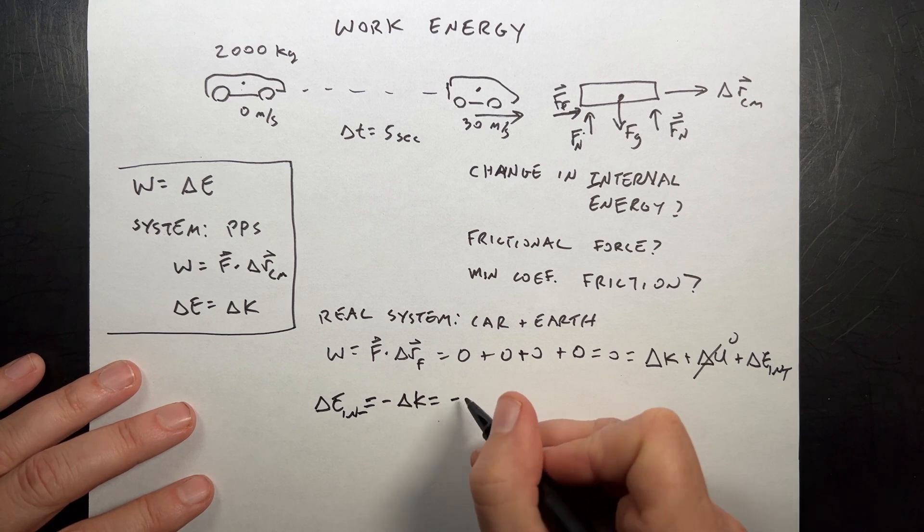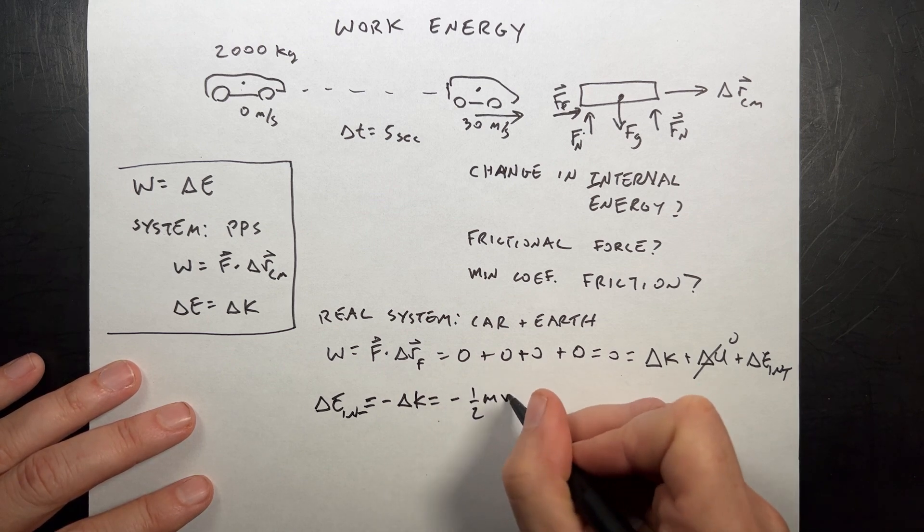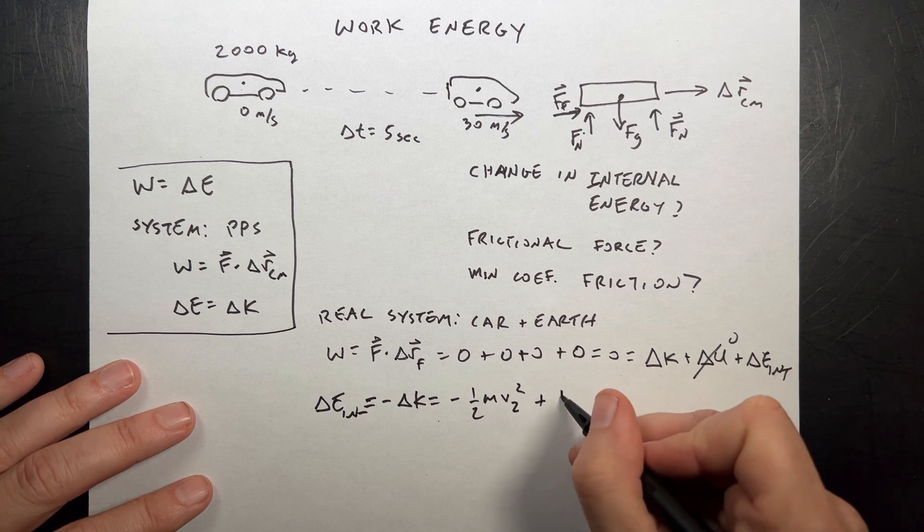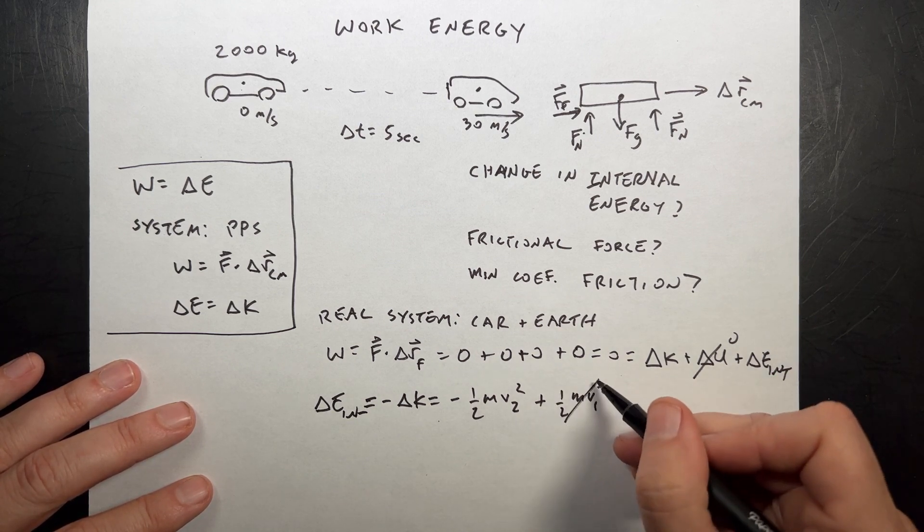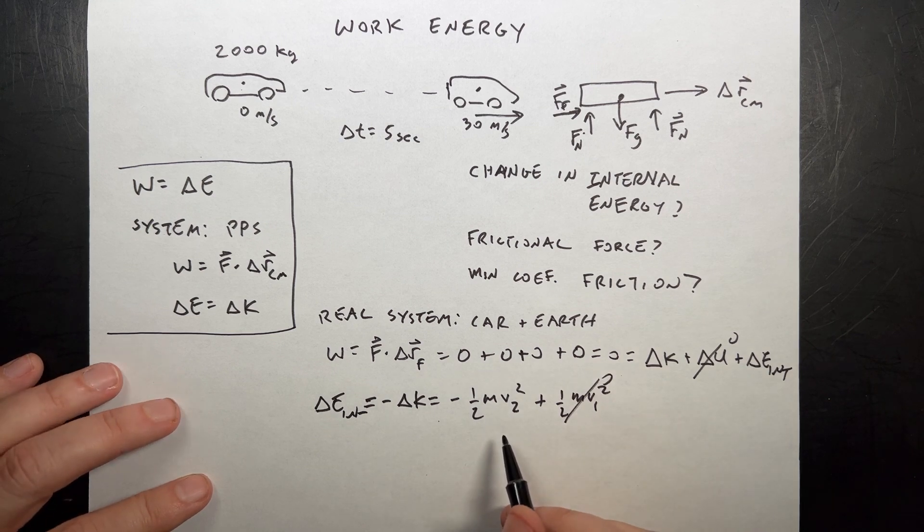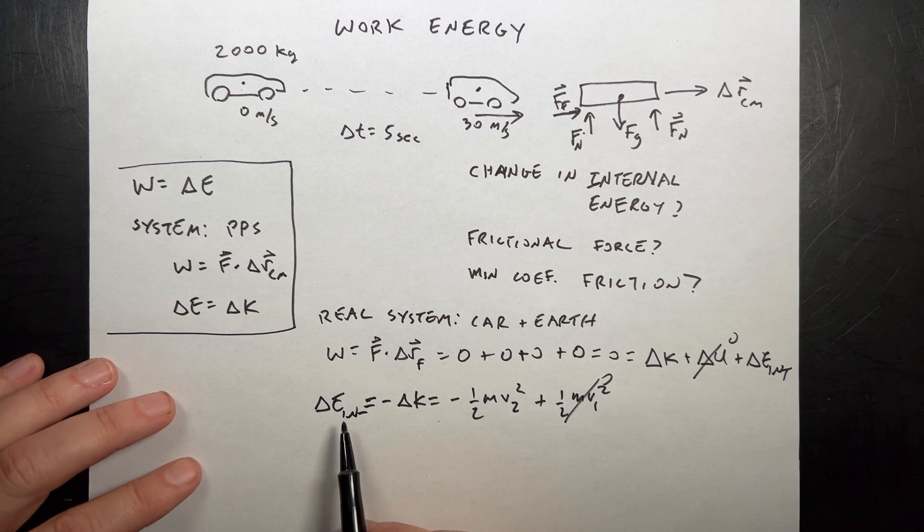And that's going to be negative one-half mv2 squared minus plus one-half mv1 squared. So the initial velocity is zero. So, and I know that. And it's negative because the internal energy is going to decrease.